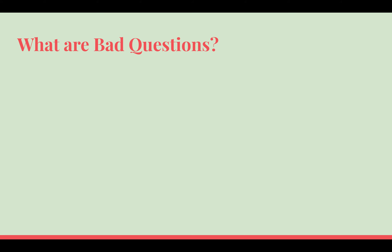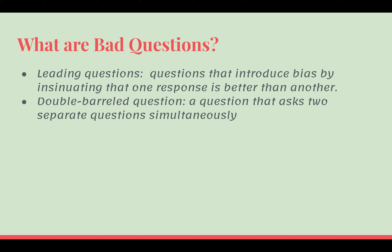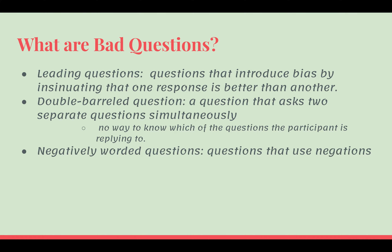To further expand on these topics, let's look at what are bad questions in research. Bad questions are questions that can skew the way that participants respond, which will also skew the data. There are numerous types of bad questions. There are leading questions, which are questions that introduce bias by insinuating that one response is better than another. There's also a double-barreled question, which is a question that asks two separate questions simultaneously — the flaw being that there's no way to know which question the participant is replying to. There are also negatively worded questions, which use negations such as not, never, shouldn't, and wouldn't, making it harder for participants to understand the true question being asked.